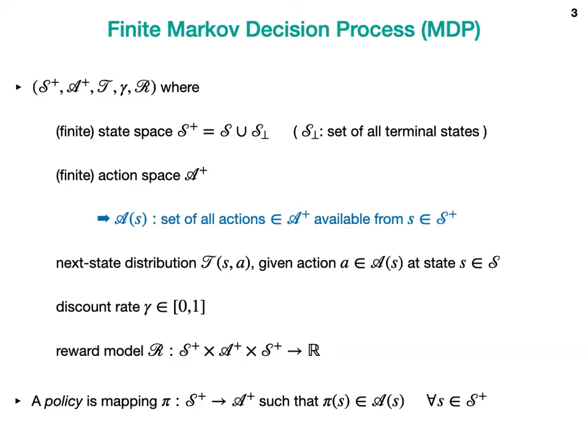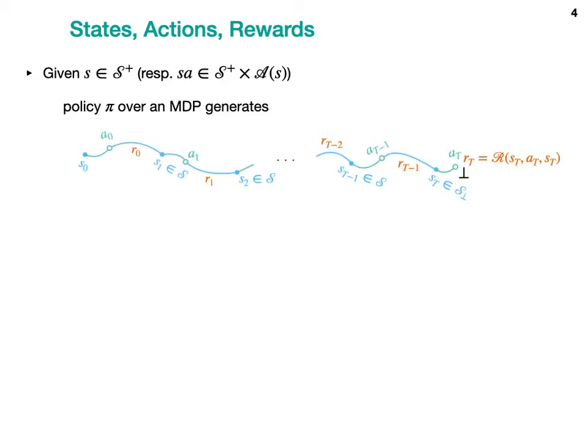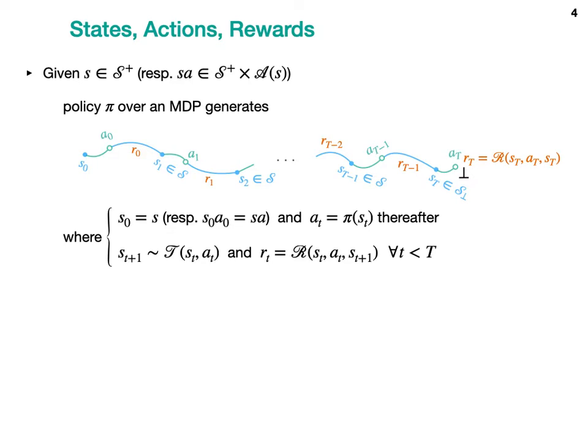Since we consider deterministic policies rather than stochastic ones, we define a policy as a mapping from state space to action space that outputs an available action for each state. Given a state S or state-action pair SA, policy Pi of an MDP generates alternating sequences of states, actions, and rewards, where the initial state or state-action is determined by S or SA, then we follow the policy thereafter with next states and rewards generated by T and the reward model R, until a terminal state is reached.